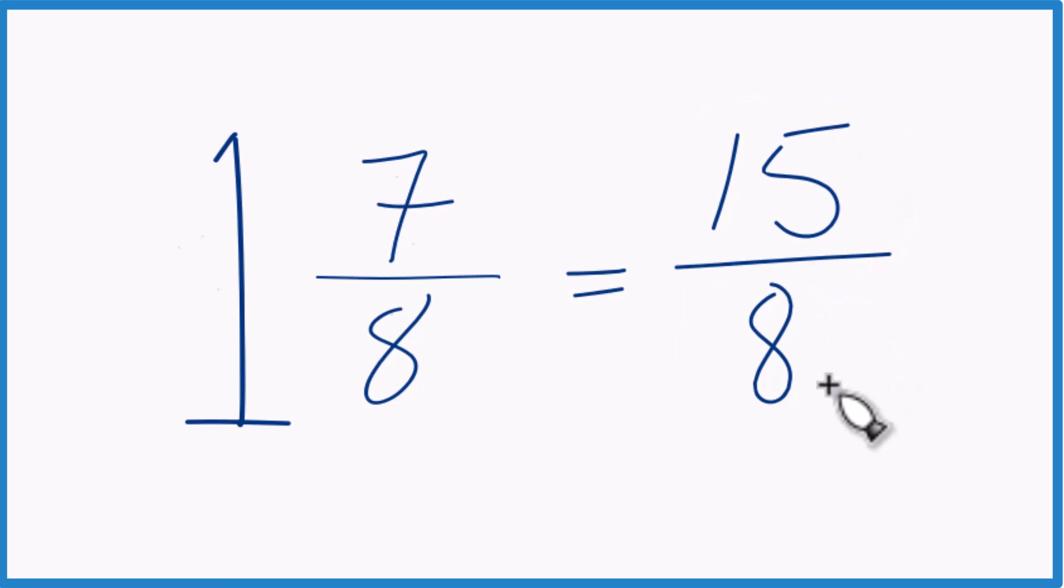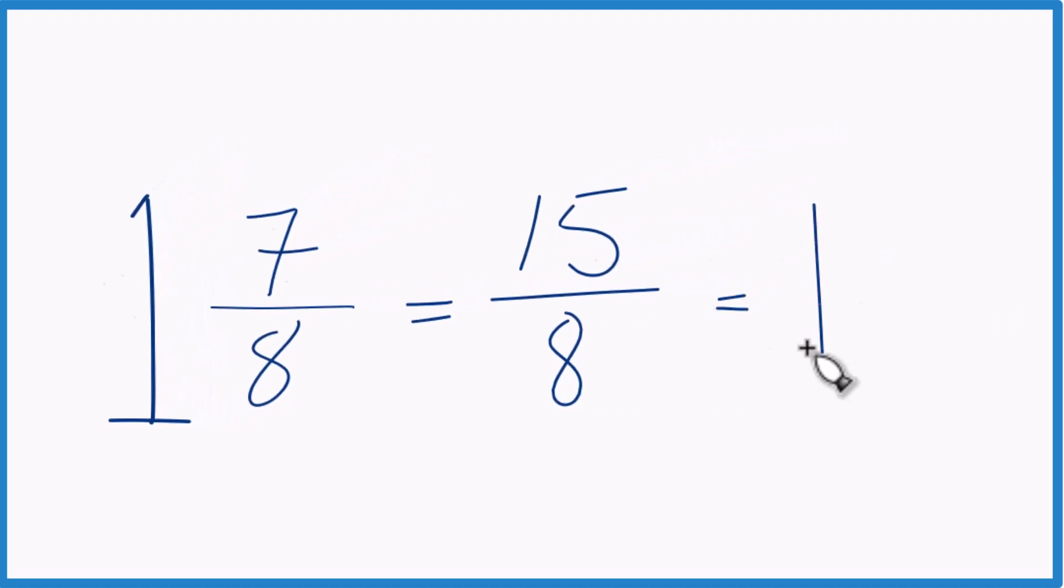We can check our work too here because 8 goes into 15 just one time with 7 left over. Bring the 8 across and we end up with 1 and 7 eighths. That's what we started with.